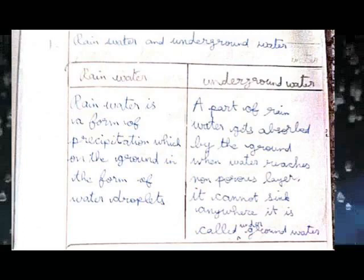Underground water: A part of rainwater gets absorbed by the ground. When water reaches a non-porous layer, it cannot sink any further. This is called underground water.